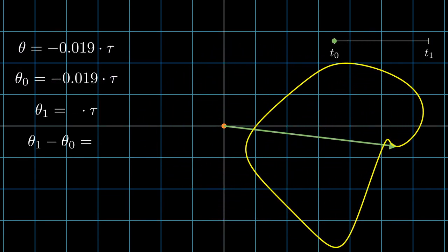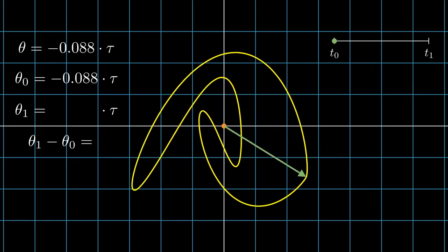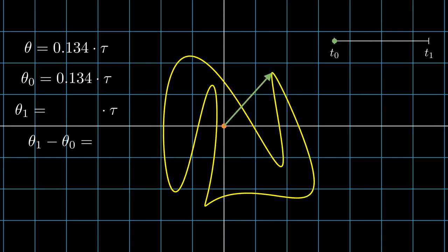Now I'll do the same thing for a closed line not containing the origin. Notice that the angle eventually goes back to theta0. Now the angle difference equals 0. Even for a more complicated closed line like this, the angle always goes back to the starting angle and makes the angle difference equal 0. Here are some more examples of both cases.